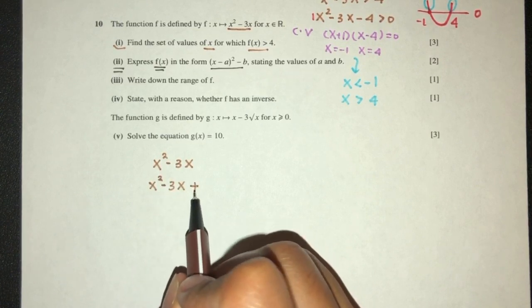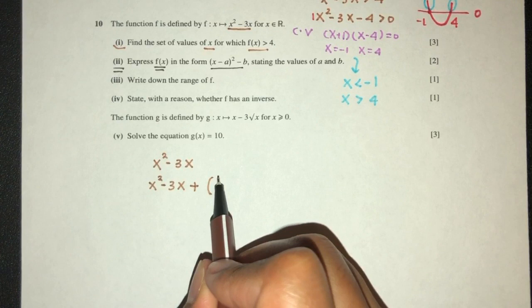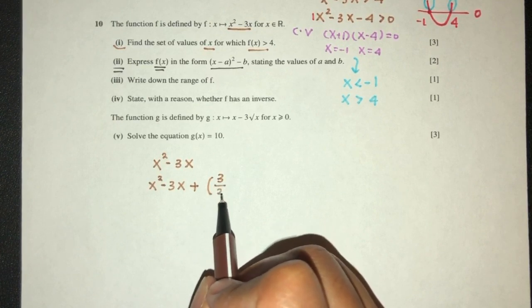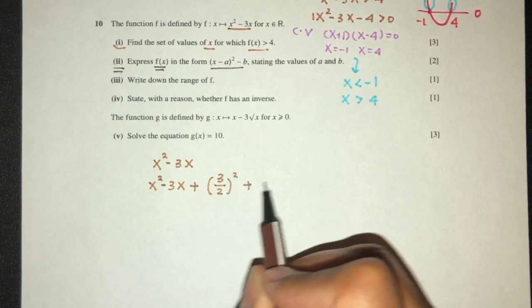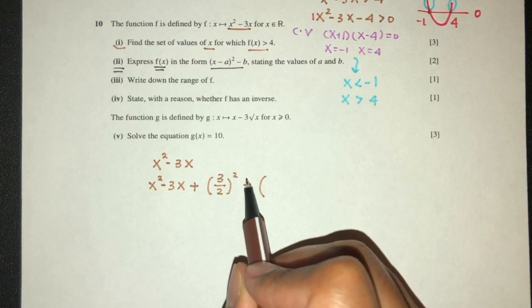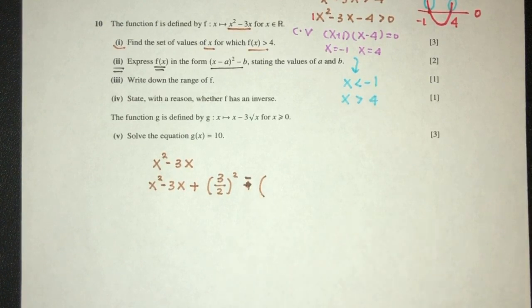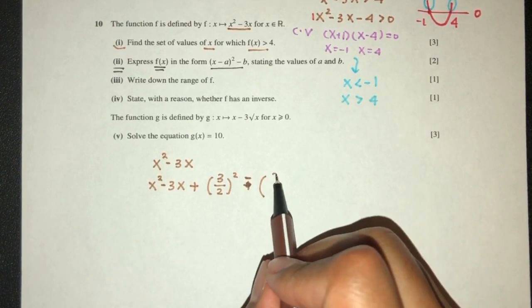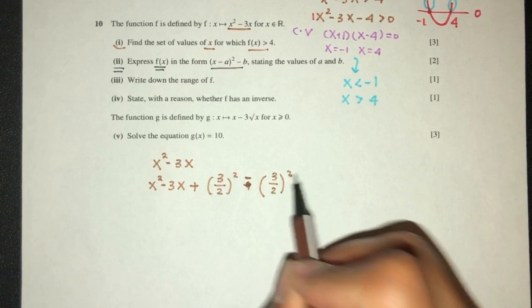Then we have to add something. We add the value here, which is just 3, divide by 2, square. Now when you add something, you also have to minus the same thing, so you don't change the equation. That will be the same thing.